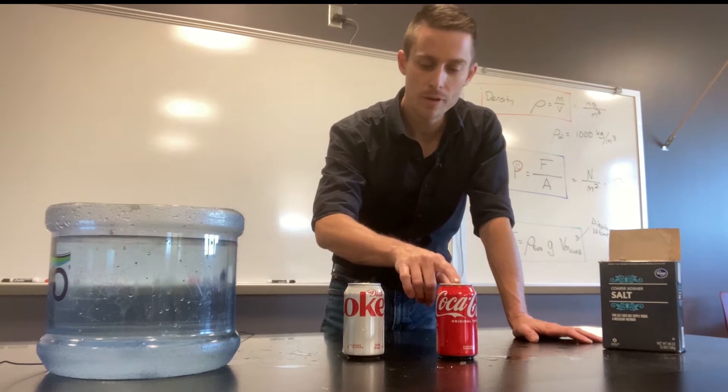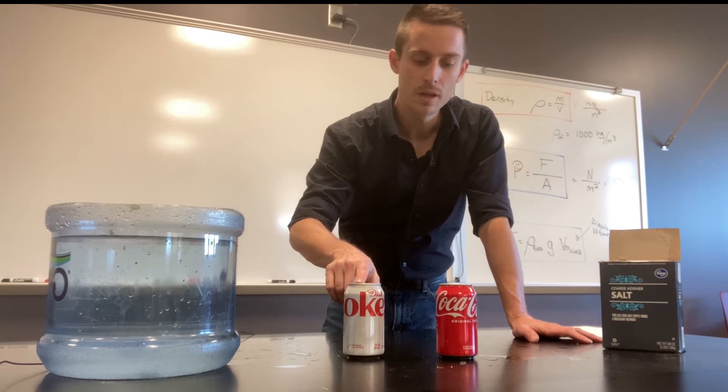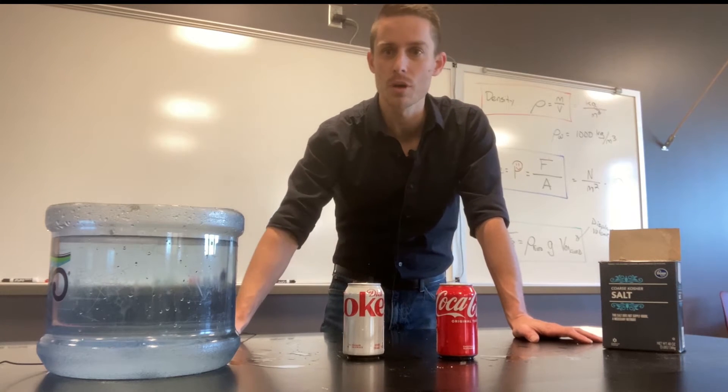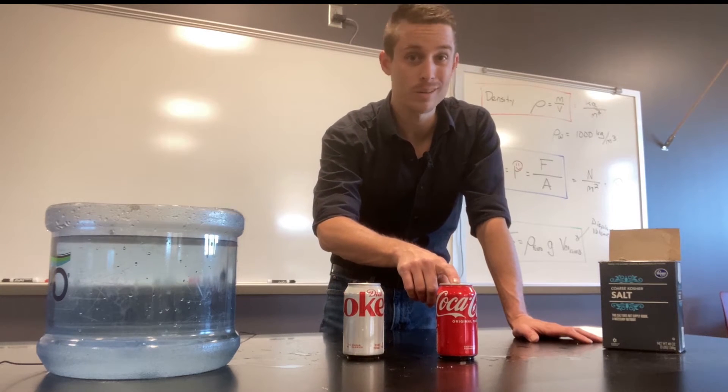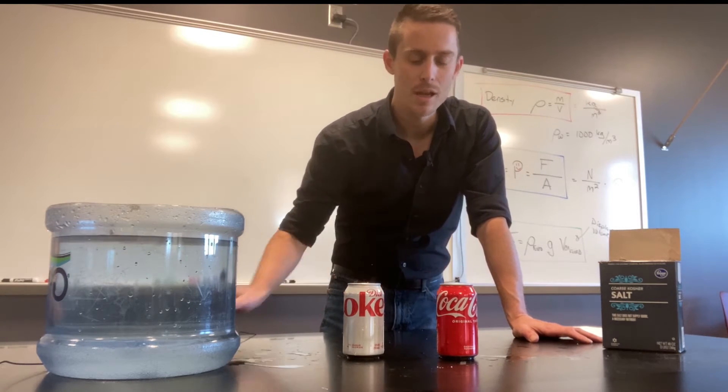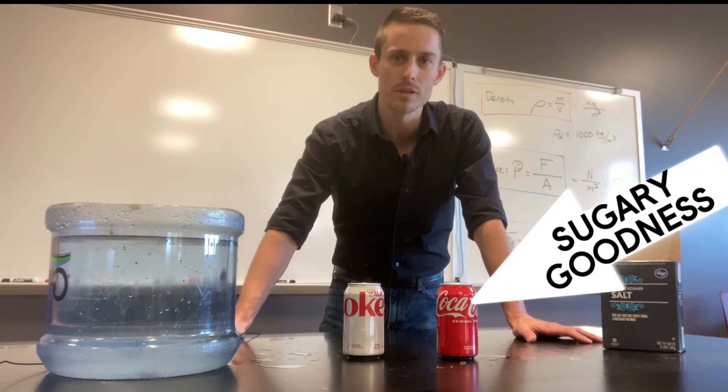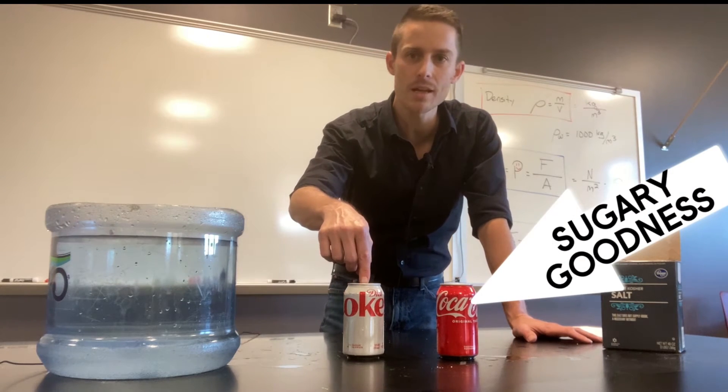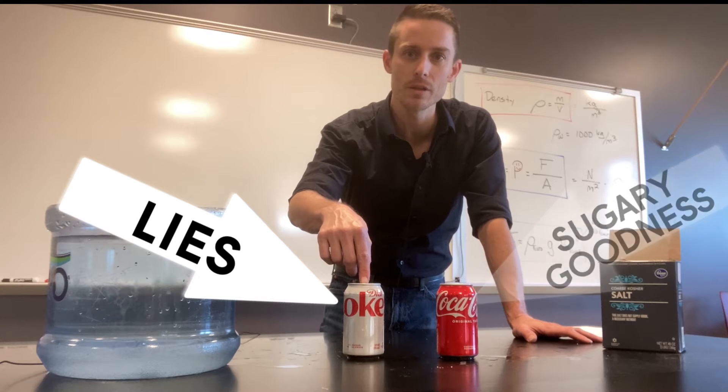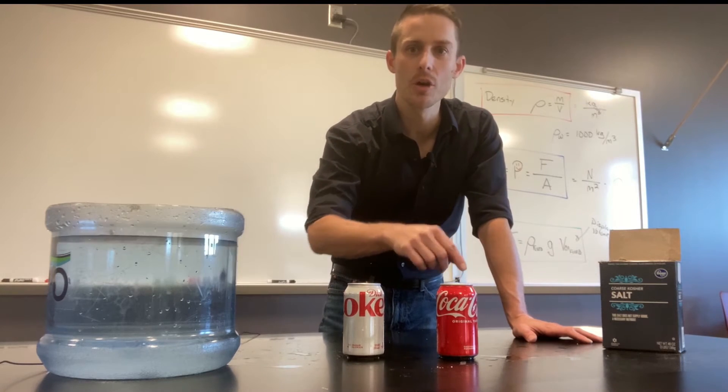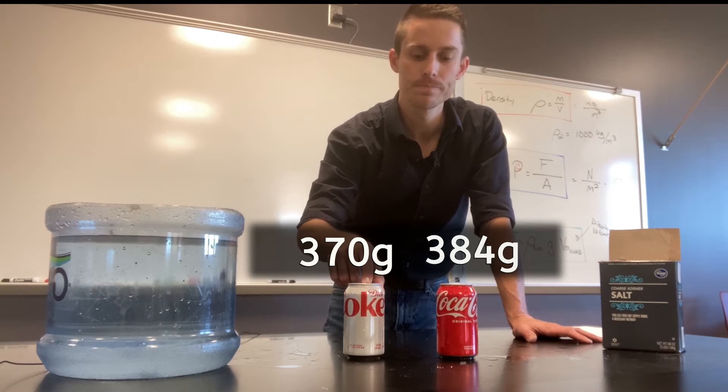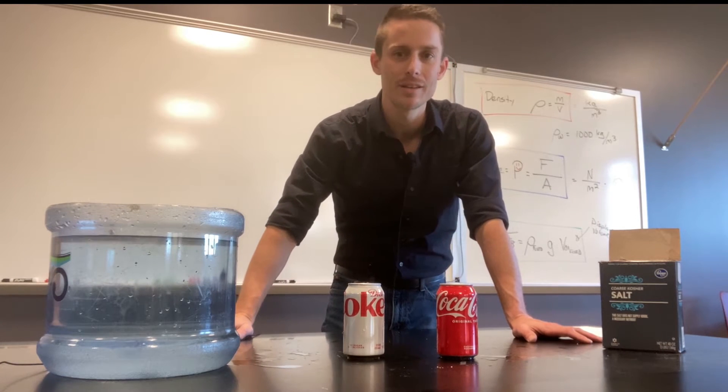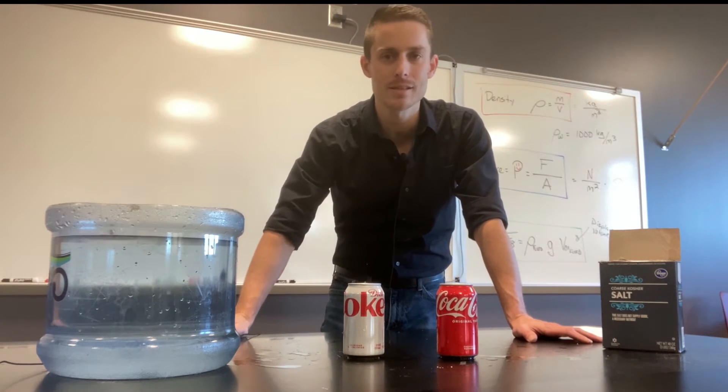So I've got a Coke and a diet Coke. I want you to realize the difference between these two Cokes is not just the calories that they contain. Regular Coke, a real Coke, actually has about 40 grams of sugar dissolved in the water in there. This diet Coke just has some artificial sweetener. So this regular Coke is literally heavier than this diet Coke. So even though these two cans have the same volume, they have different densities.